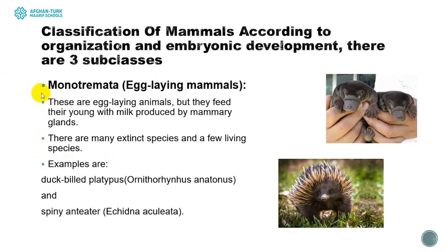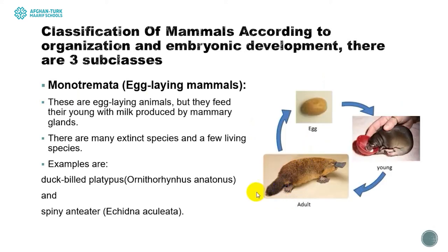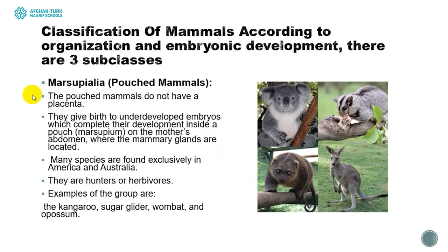Starting with egg-laying mammals or Monotremata — these are duck-billed platypuses and anteaters. Only a few living species remain from this kind of animal. Their life cycle is: the adult lays an egg, the egg hatches into a young platypus, and the young grows up to be an adult. The interesting thing about this kind of animal is that they have mammary glands — they can produce milk and feed their young with it.